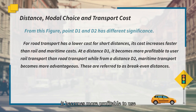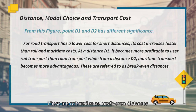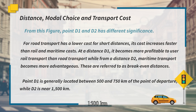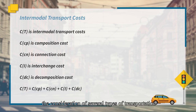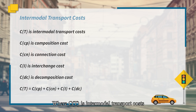At distance D1, it becomes more profitable to use rail transport than road transport. From distance D2, maritime transport becomes more efficient. These are referred to as break-even distances. Point D1 is generally located between 500 km and 750 km from the point of departure, while D2 is nearly 1,500 km. The intermodal transportation cost implies consideration of several types of transportation for routing freight from its origin to its destination. The cost function CT is the intermodal transport cost, where CCP is the composition cost, CEN is the connection cost, CL is the interchange cost, and CDC is the decomposition cost.